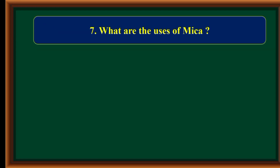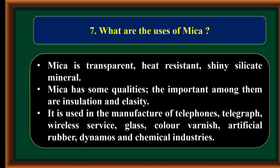What are the uses of mica? Mica is a transparent, heat-resistant, shiny silicate mineral. Its important qualities include insulation and elasticity. It is used in the manufacture of telephones, telegraph, wireless service, glass, colour varnish, artificial rubber, dynamos, and chemical industries.